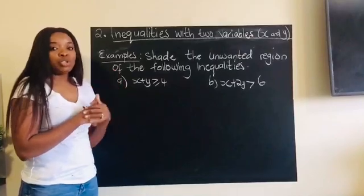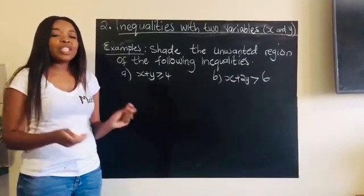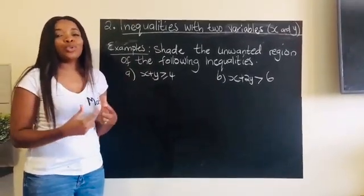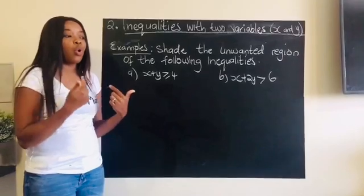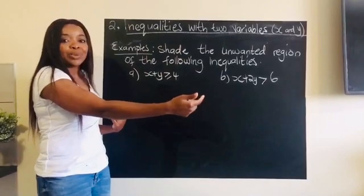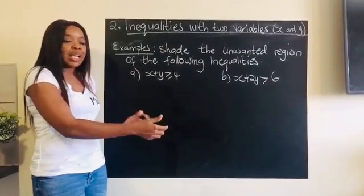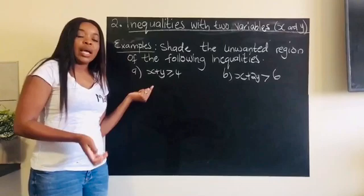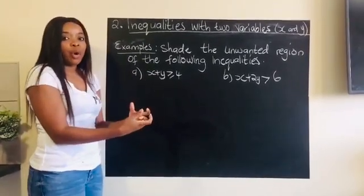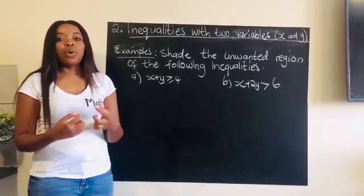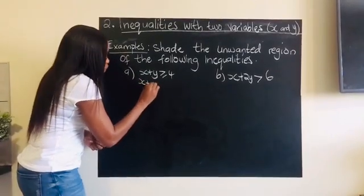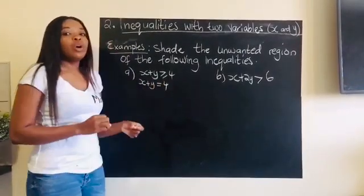The first thing you want to do is not quite to draw your two axes — your x and y axis — because you don't really know your limits yet. You want to know which numbers to end on on each side. Remember, we can't work with an inequality when drawing a graph; we want to have an equation. So I'm going to say this is x plus y equal to four.